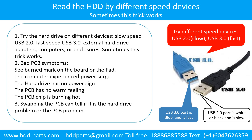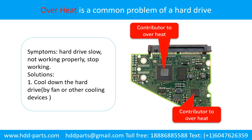Another way is swapping the hardware PCB board. Swapping the hardware PCB board can fix problems caused by the PCB board. There is a cost in swapping the PCB board, but it is way cheaper than sending the hard drive to a data recovery firm. Overheat is a common problem of hard drive PCB boards. Solutions include cooling down the hard drive using a fan or other cooling devices, or replacing or fixing the PCB board.